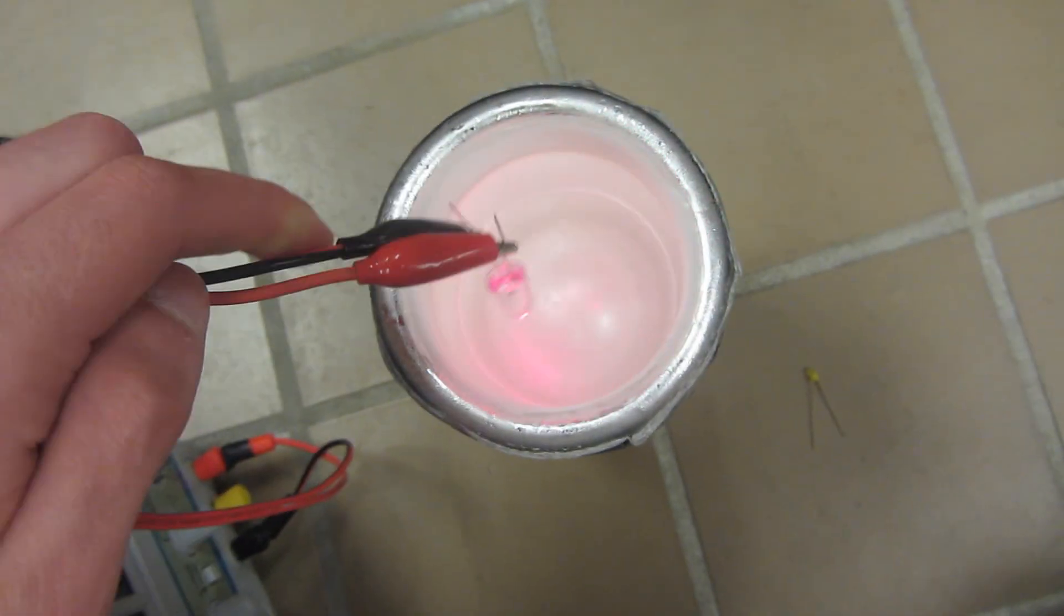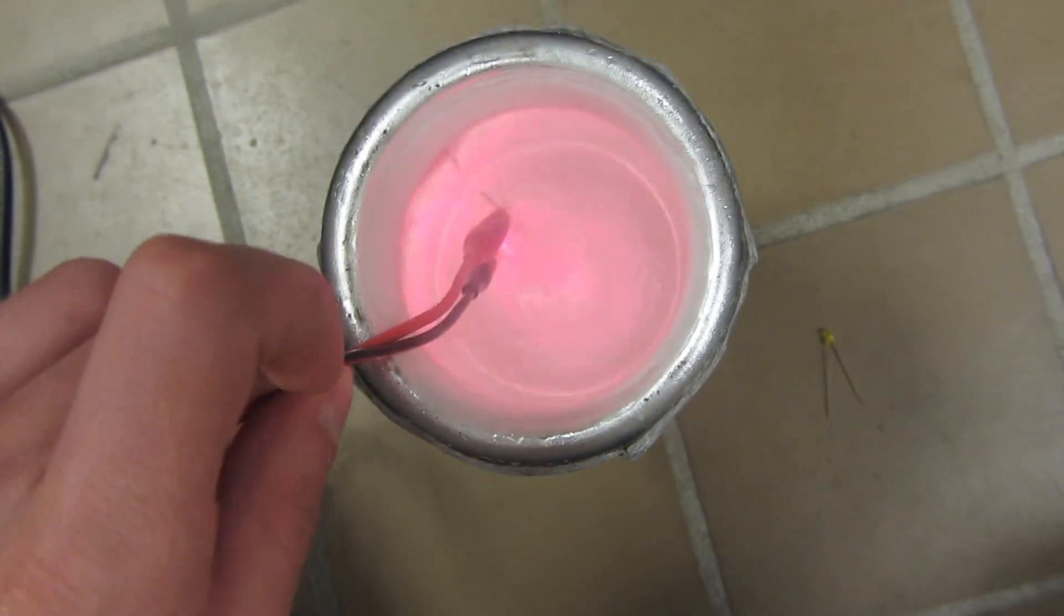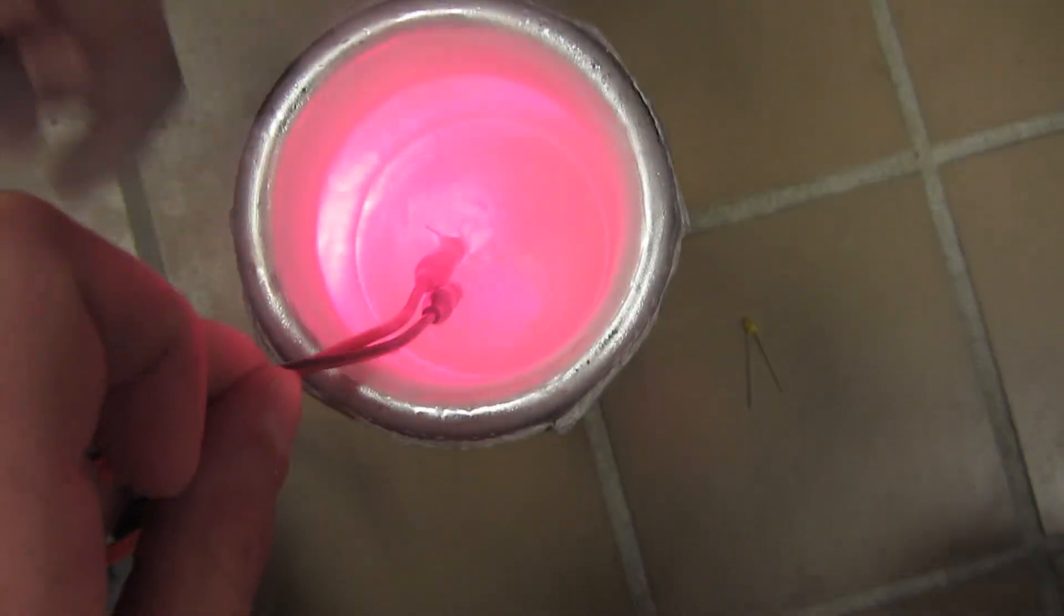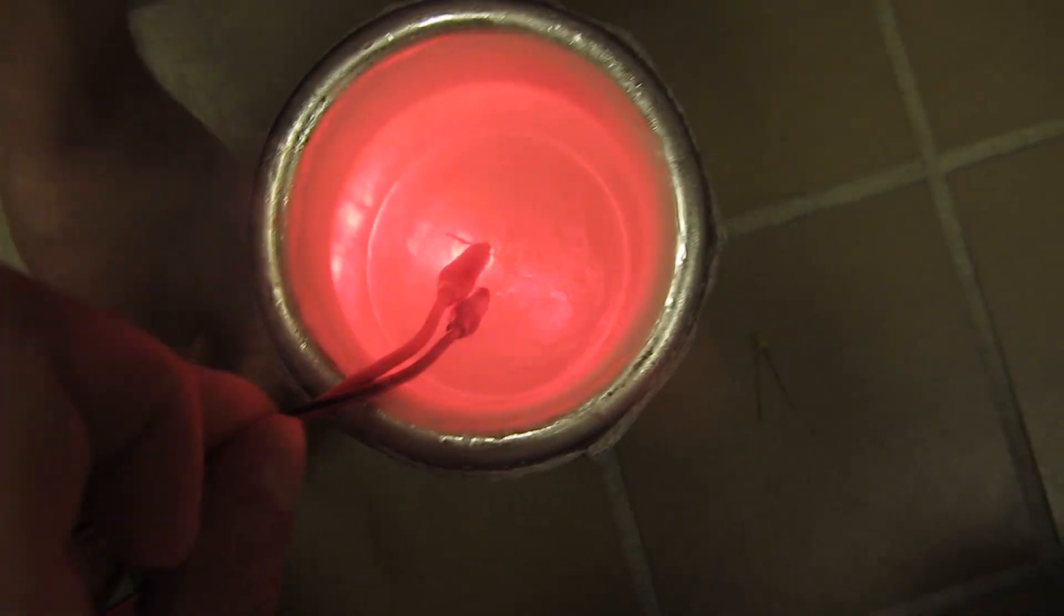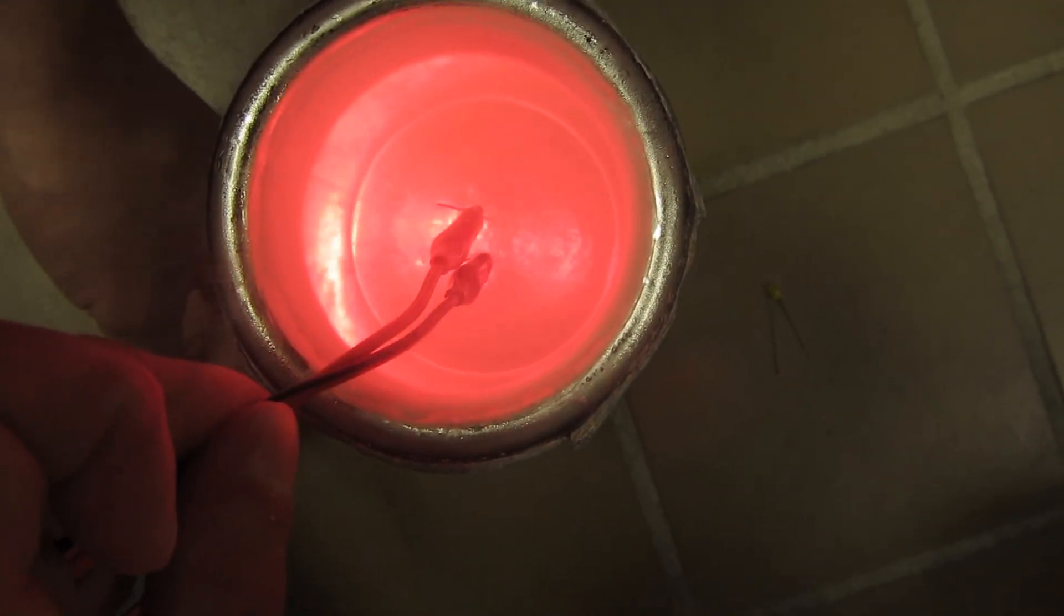Alright, so here we have a red LED. We'll see if we can notice any change. If I can get this silly thing in there. It's definitely warm, but... oh wow. Oh yeah, it's hard to see on camera. Okay, now you can see it. Oh yeah, definitely blue shifted.